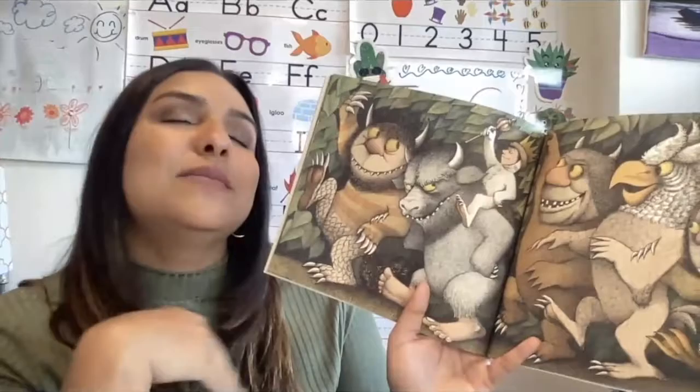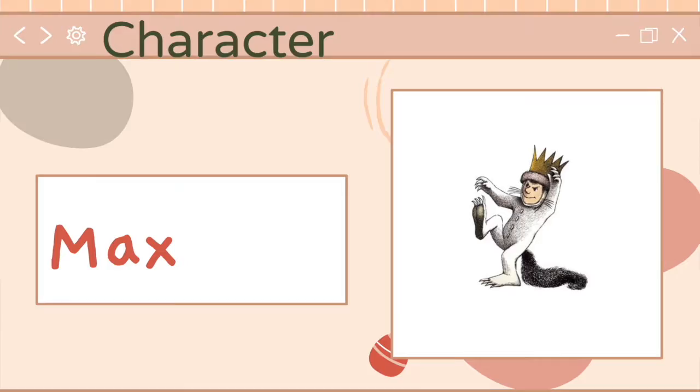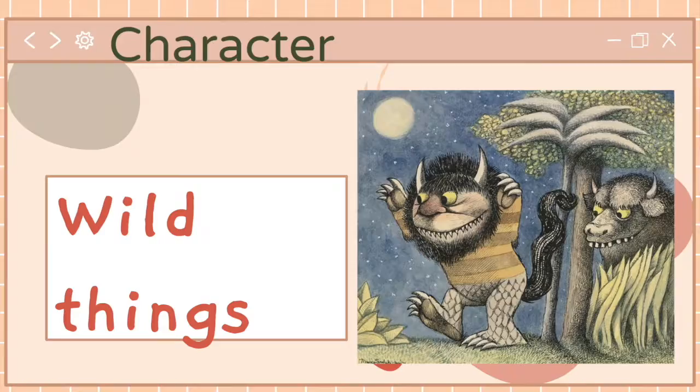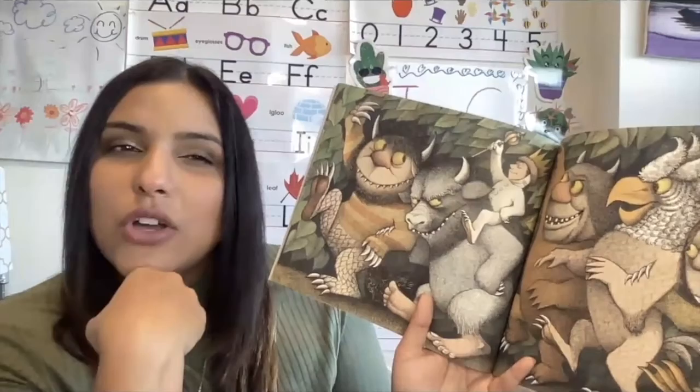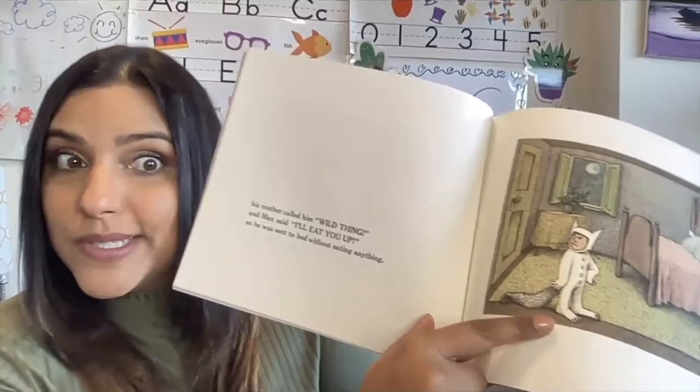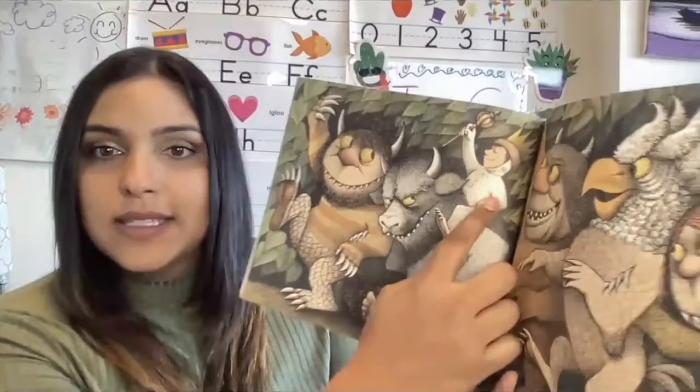If you are taking some guesses, I am so proud of you. The little boy, whose name is Max, he's a character in our story. The wild things are characters in our story. And there's one other character, but they didn't really show that person. The doggy's not really a character, because he didn't really talk. But the person who told him to go to bed did — who was that? The mom. So we have Max, his mommy, and the wild things — they're all characters in our story.